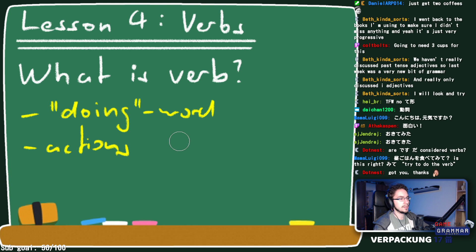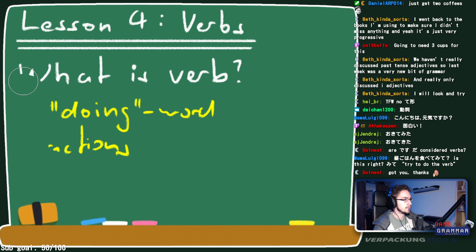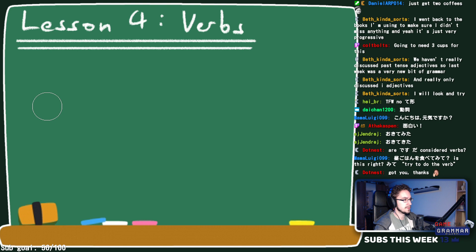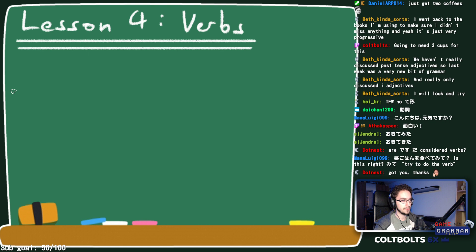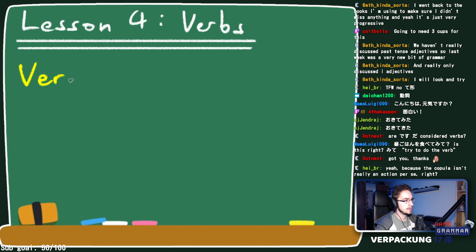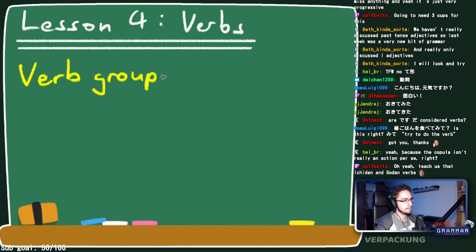Now that we know what a verb is — examples in English include 'to run,' 'to go,' 'to sleep' — let's look at verbs in Japanese. As I introduced earlier, we're going to talk about groups first. Broadly speaking, there are only three groups of verbs.